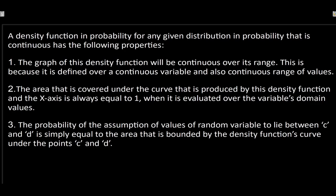Here are the properties of a probability density function. First, the graph of the density function will be continuous over its range — that is, between all possible values of x, whether from zero to some maximum or from negative infinity to positive infinity. The graph will be continuous and won't have any breaks throughout it, because it's a continuous variable defined as being continuous over its range.